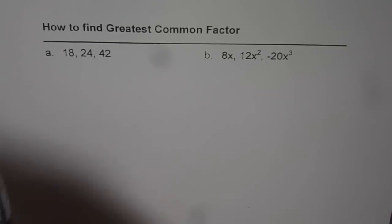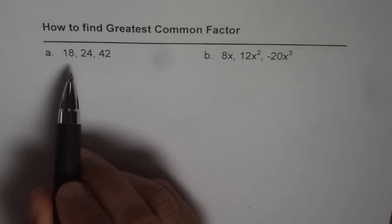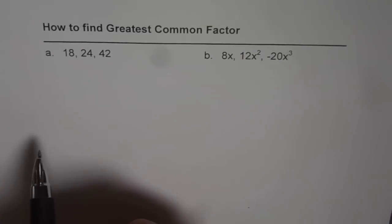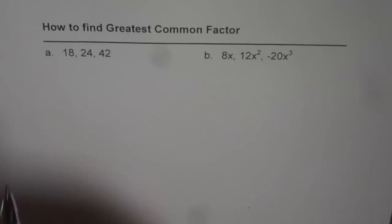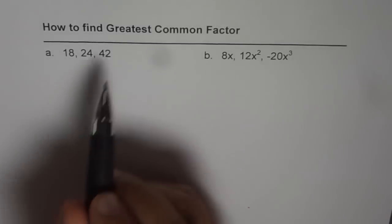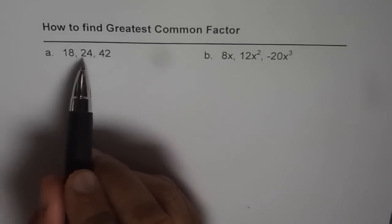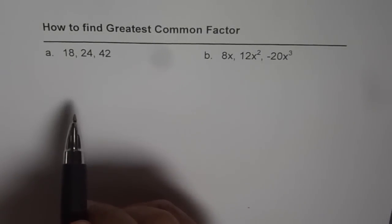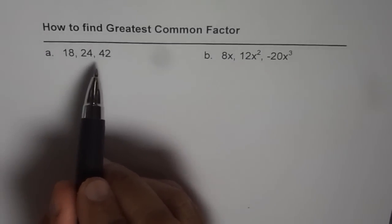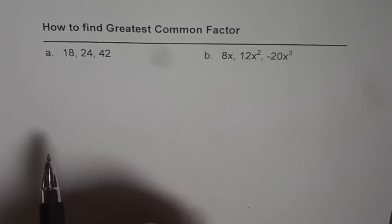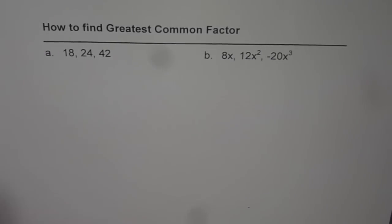Let's begin with the numbers first. As a reminder, to find the greatest common factor, let's factorize each one of them and write all possible prime factors — that will help us find the greatest common factor. This is kind of a review for most of you.